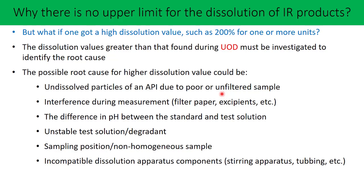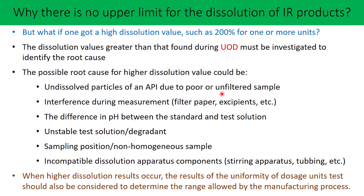Incompatible dissolution apparatus components are another cause — for example, if your stirring paddle or basket interacts with your drug substance, or if your tubing components produce leachables. For instance, for certain products SS316 paddle is not compatible, so you may need a Teflon-coated paddle or one made from another metal. In such erratic high-result situations, the result of the uniformity of dosage unit test should be considered to determine the range allowed by the manufacturing process. If the variation is greater than your UOD variation, it can be attributed to analytical variation rather than manufacturing variation.